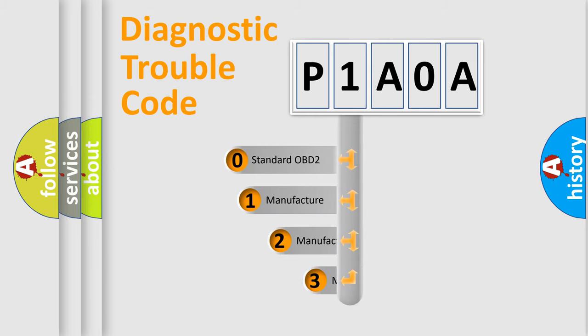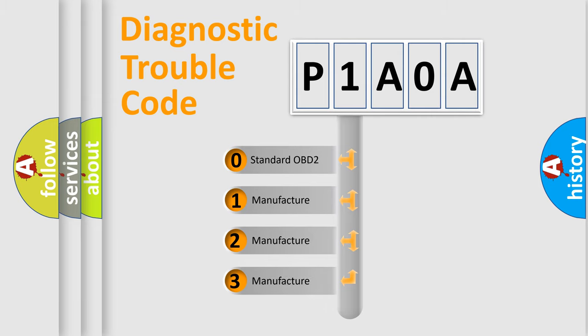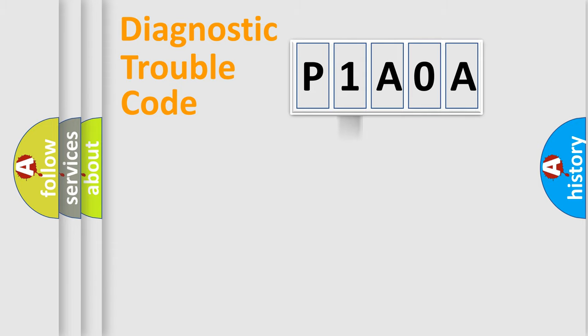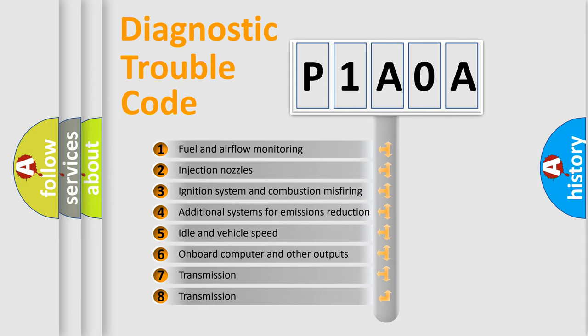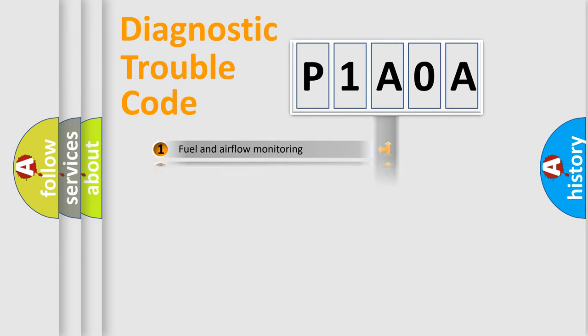If the second character is expressed as zero, it is a standardized error. In the case of numbers 1, 2, or 3, it is a manufacturer-specific error expression. The third character specifies a subset of errors. The distribution shown is valid only for the standardized DTC code.